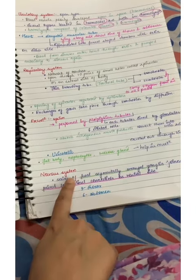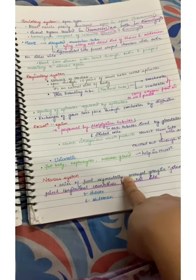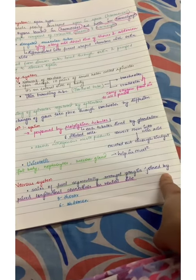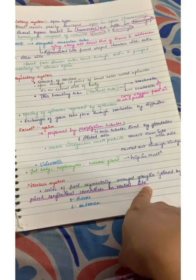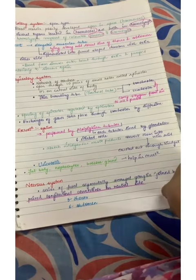In the nervous system, see, series of fused segmentally arranged ganglia joined by paired longitudinal connectives on ventral side. So see, three are in the thorax and six are in the abdomen, spread throughout the body.